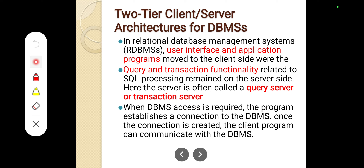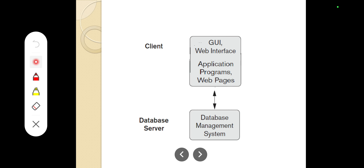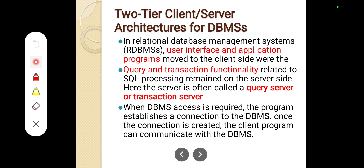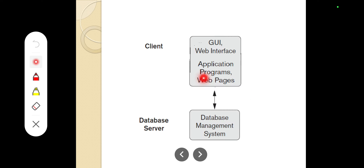In the two-tier architecture, the server is often called the query server or transaction server. When DBMS access is required, the program establishes a connection to the DBMS. Once the connection is created, the client program can communicate with the DBMS. To establish that connection, we use a separate entity called ODBC — Open Database Connectivity — which is an application programming interface that allows the client to connect to the server and communicate.